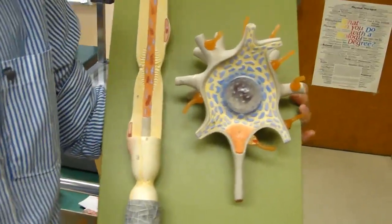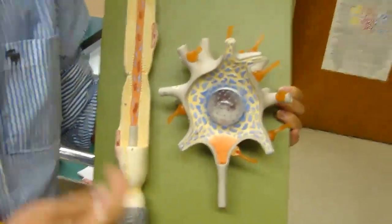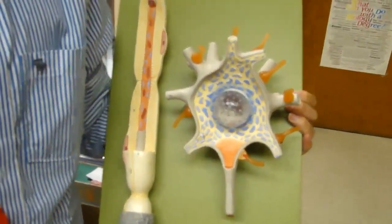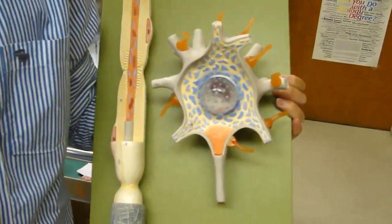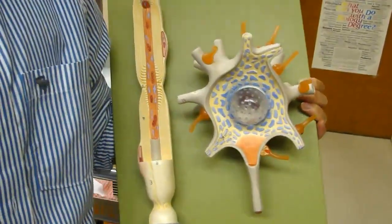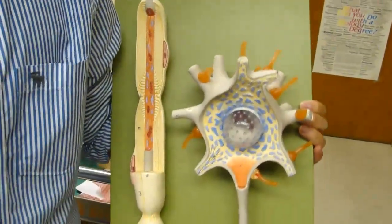All right, this guy right here represents the neuron and you can see that it's a multipolar neuron type, which means its function is for a motor, so it sends the action potential out from the CNS to the peripheral nervous system.